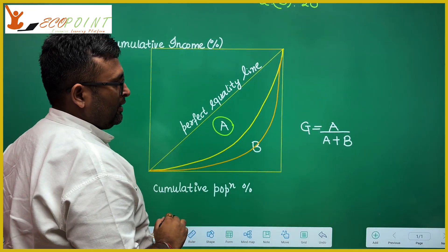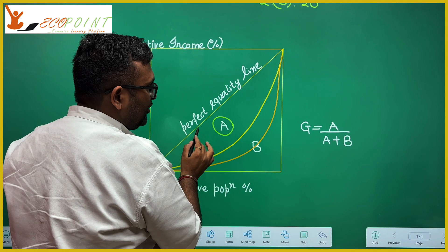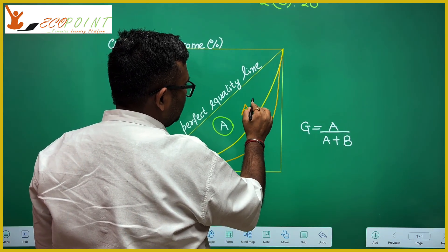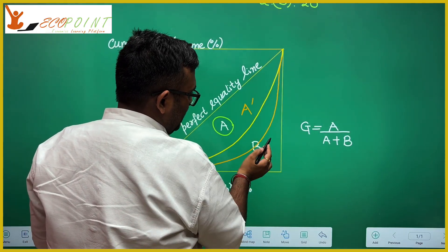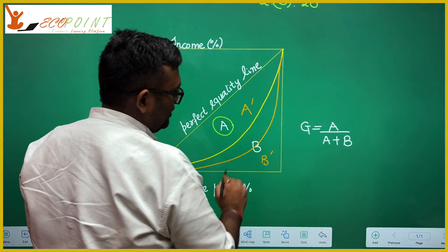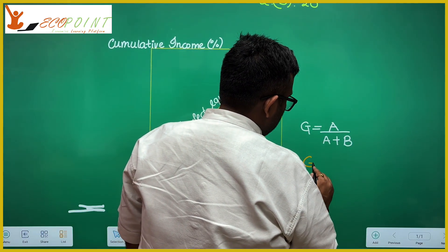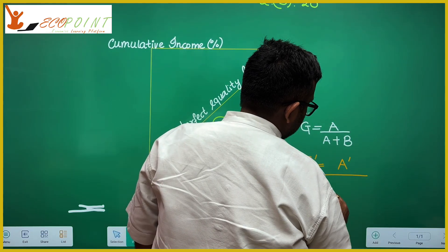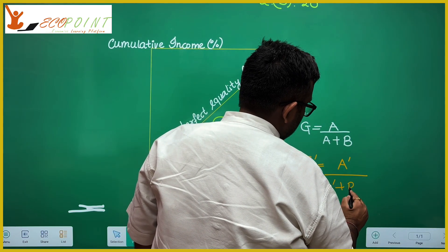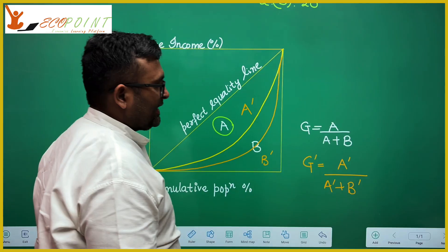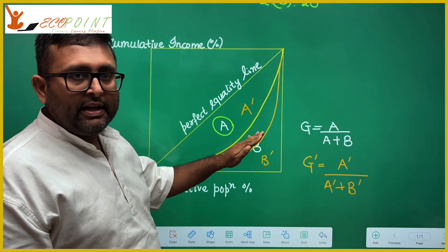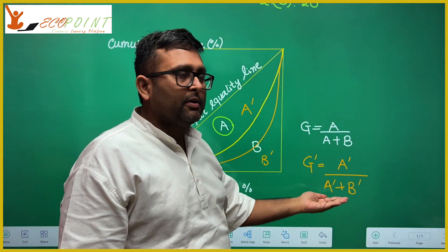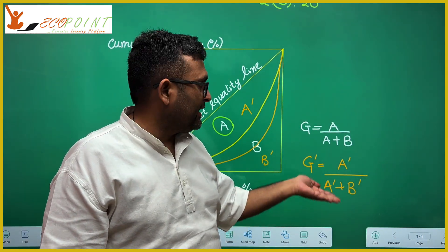So in case if you have Lorenz curve like this, so in that case what happens? The area between line of perfect equality and this orange Lorenz curve is A dash. It is greater than A. And this area is B dash which is lesser than B. So G dash is A dash upon A dash plus B dash. So there is more inequality in case of this orange Lorenz curve. And this is also shown in terms of Gini coefficient because this value is going to be higher than the value of G.